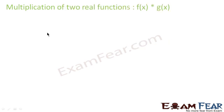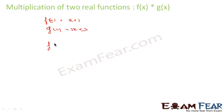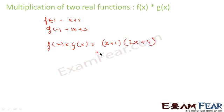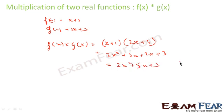When we multiply two functions: if f(x) = x + 1 and g(x) = 2x + 3, then f(x) × g(x) = (x + 1)(2x + 3) = 2x² + 3x + 2x + 3 = 2x² + 5x + 3.